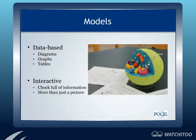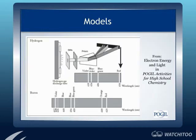Models can take many forms including diagrams, graphs, or tables. They often represent particulate levels for chemistry or microscopic levels for biology, and encourage students to make relationships between symbolic letters and equations and things they can actually observe. In the electron energy and light activities, students compare and contrast different spectra and get an idea of how the spectra are made. This isn't a replacement for the lab — if students get to see it live with a spectroscope, they have a better picture of what they're seeing.